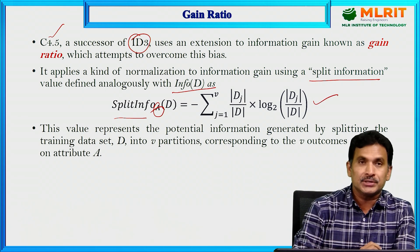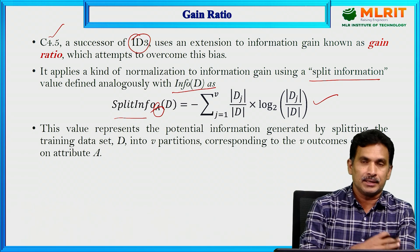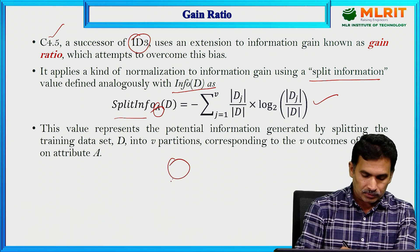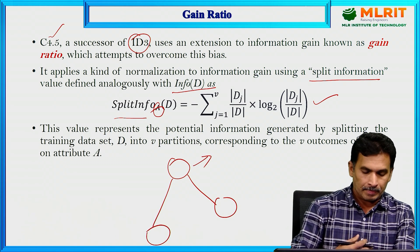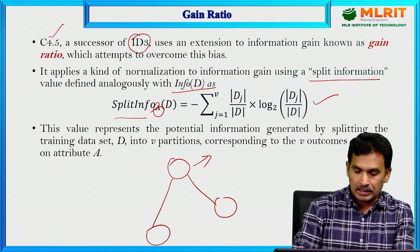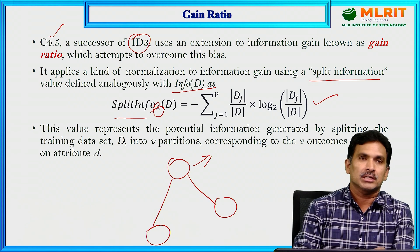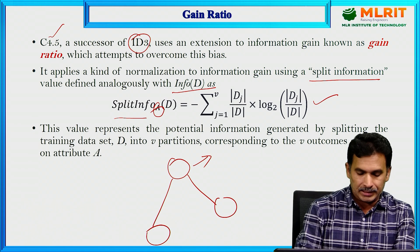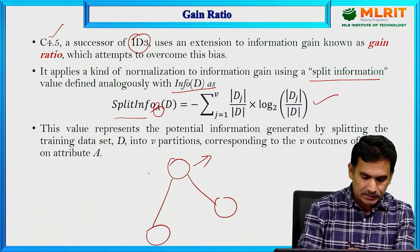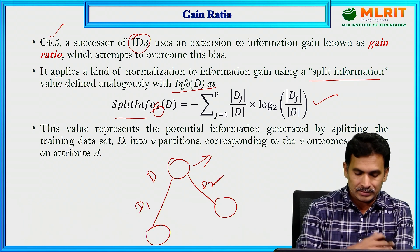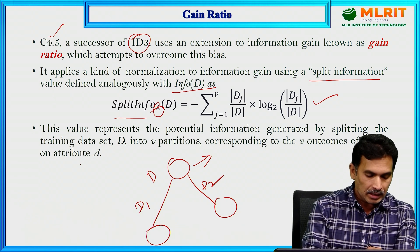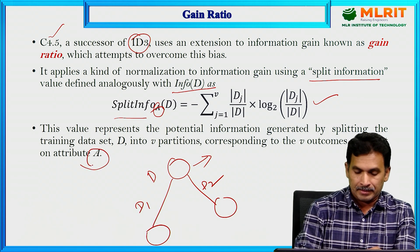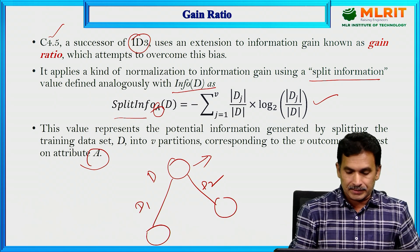The split information value represents the potential information generated by splitting the training data. Suppose you have selected an attribute at this stage — then what is the potential information generated by splitting the training dataset D into two partitions D1 and D2? That split information would be calculated by using this equation, where for each outcome it considers the number of tuples having that outcome with respect to the total number of tuples in D.